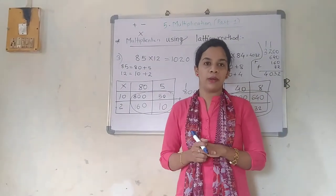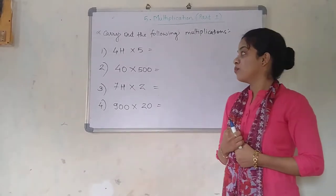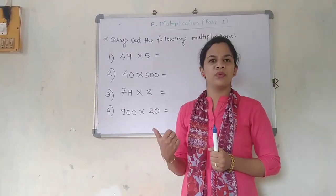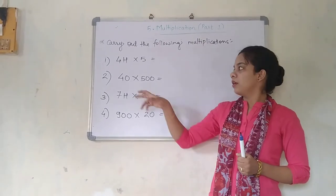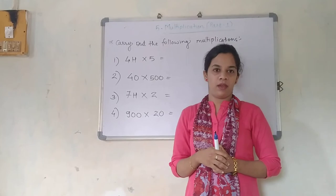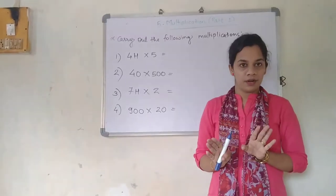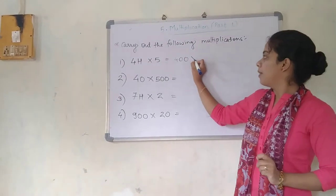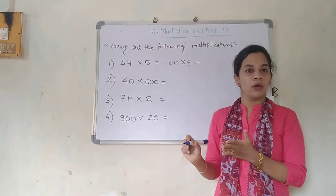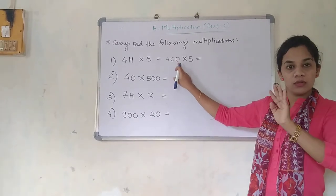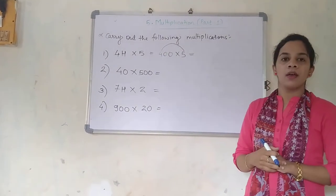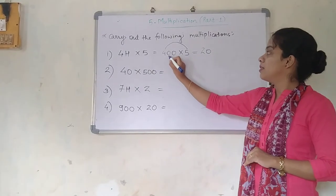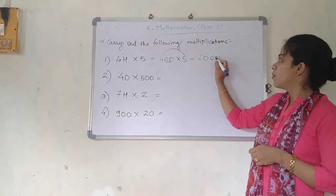Now just see: carry out the following multiplications — fill in the blank type. Just see: 4H into 5, where H stands for hundred. So 400 multiplied by 5. Just see — this is consisting of two zeros; don't focus on those two zeros. Just focus on this 4 and this 5: 4 multiplied by 5 is 20. And how many zeros are present? Two zeros — just add over here. So you got your answer: 2000. Next question: 14 into 500. 4 multiplied by 5 is 20; one zero here and two zeros here — three zeros total. Answer is 20,000.